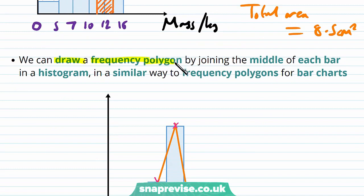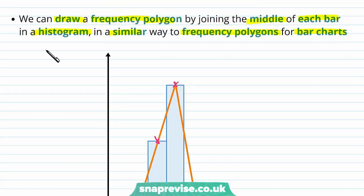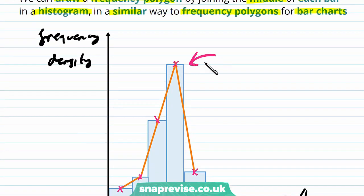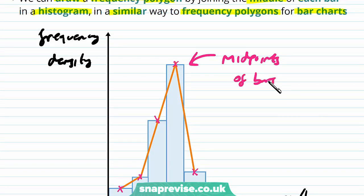We can draw a frequency polygon by joining the midpoints of each bar in a histogram, in a similar way to frequency polygons of bar charts. Plotting frequency density against mass in kilograms with axis values of 0, 5, 7, 10, 12 and 16, we take the midpoints of the class intervals and draw lines dot to dot to get a frequency polygon for a histogram.